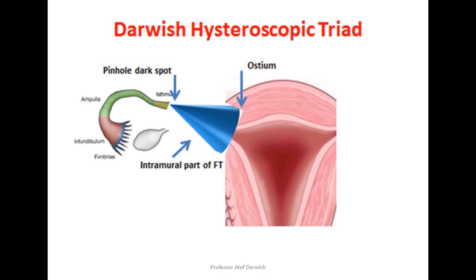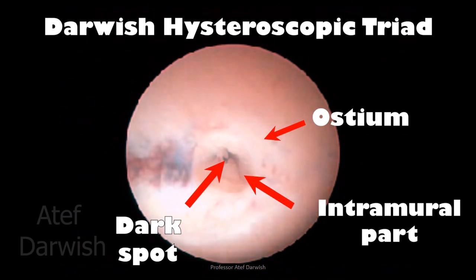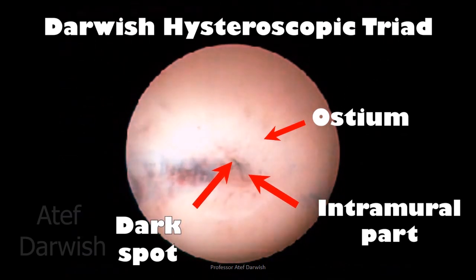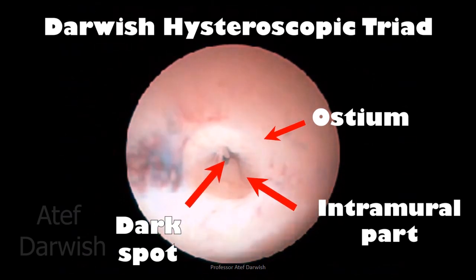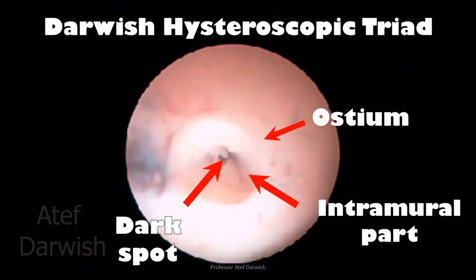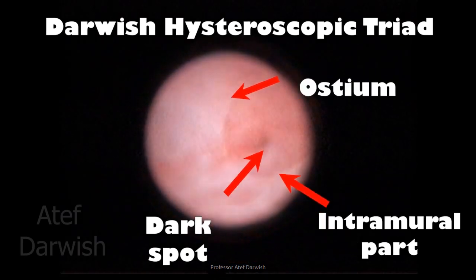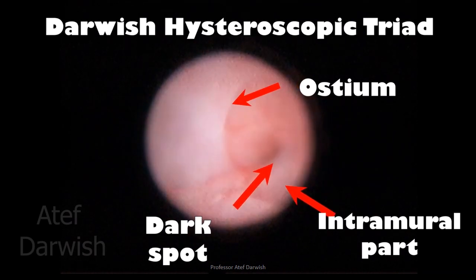The Darwish hysteroscopic triad is a conical part of the fallopian tube whose base is the tubal ostia and whose apex is a pinhole dark spot representing the narrowest part of the fallopian tube. The lateral walls of this cone are formed by the intramural part of the fallopian tube. In this video you can see the ostia as a fine circle; inside it you can see the cone with converging walls formed by the intramural part, and the summit is a dark spot representing the narrowest part of the fallopian tube.